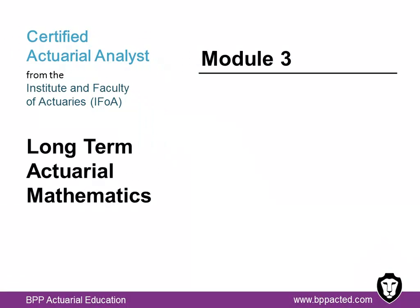Module 3 covers long-term actuarial mathematics, which covers the techniques used to model and value cash flows dependent on death, survival and other uncertain risks arising in pensions and life insurance. It's a two-hour exam plus 15 minutes of admin time administered by Pearson VUE, consisting of 65 multi-choice questions, with 125 to 150 hours of recommended study. The syllabus covers nine topic areas. Simple assurance and annuity contracts — you'll define these contracts, their actuarial symbols, and obtain expressions for the mean and variance of the present value of the payments under these contracts.